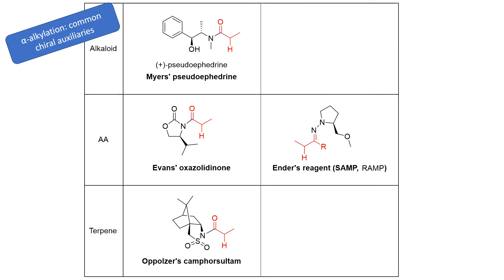So, once the auxiliary has been bound to the substrate, you use LDA and alkylate that enolate diastereoselectively. Afterwards, you cleave the auxiliary with hydrolysis, or in the case of Ender's Hydrazone, ozonolysis.